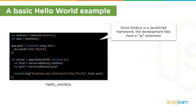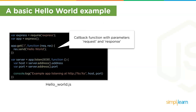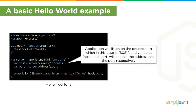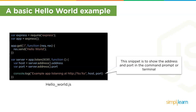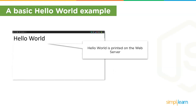Let's look at a simple Hello World program built using Express framework. First, var express is used to import the Express framework. The app.get() method is a callback function with request and response parameters. The request object represents the HTTP request with properties like query string, parameters, body, and HTTP headers. The response object represents the HTTP response. The application listens on port 8081, and variables host and port contain the address and port. console.log shows the address and port in the command prompt, and the output is displayed in the web browser.